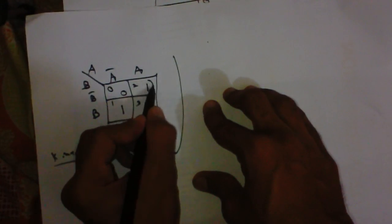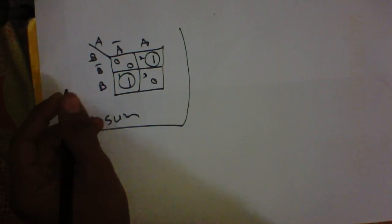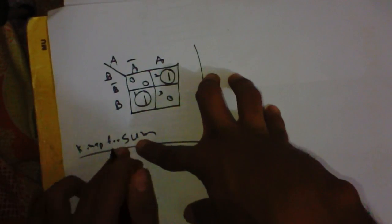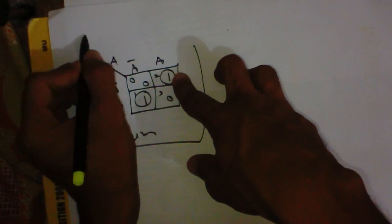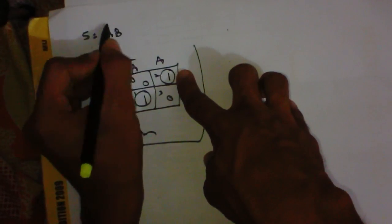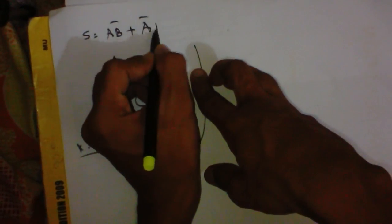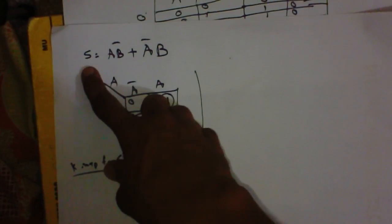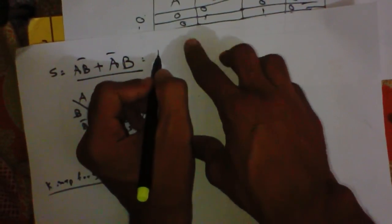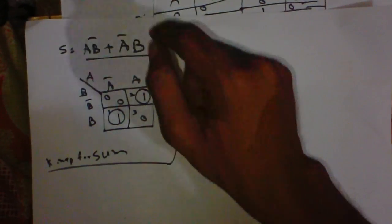So here we have a group of one and two. The arithmetical expression for the sum of the half adder will be: for position one the expression is A·B-bar, and for position two the expression is A-bar·B. So the expression for the sum of the half adder is A·B-bar + A-bar·B. This is nothing but the expression of the XOR gate, which is useful to draw the circuit diagram of a half adder.